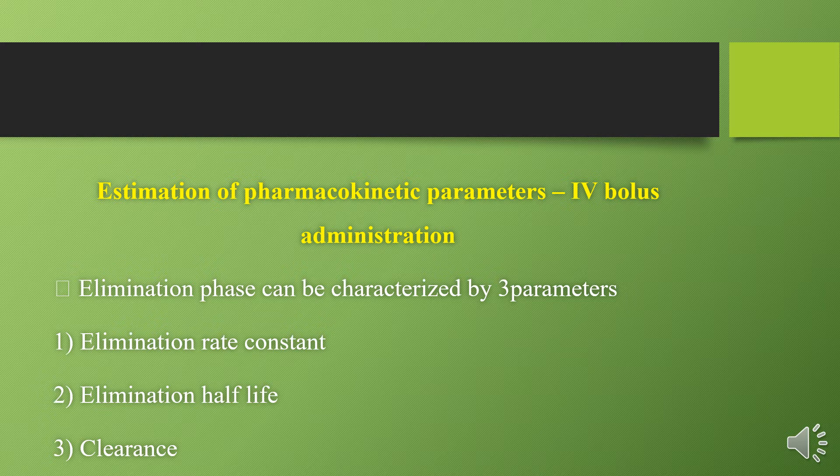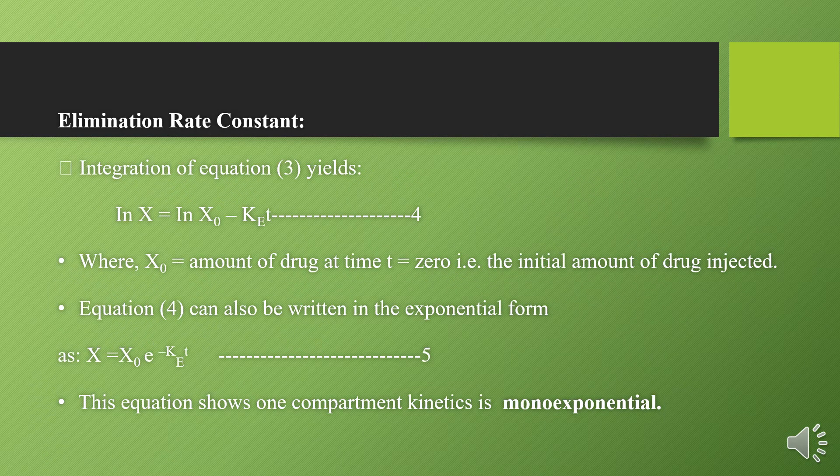In the elimination phase, it is characterized by three parameters: elimination rate constant, elimination half-life, and clearance. For the elimination rate constant, the equation dX/dt = −Ke·X, when converted in terms of natural logarithm, becomes: ln X = ln X₀ − Ke·t, where X₀ is the amount of drug at time zero. The integrated equation in exponential form becomes: X = X₀·e^(−Ke·t). Since there is only one exponent, this equation is mono-exponential.